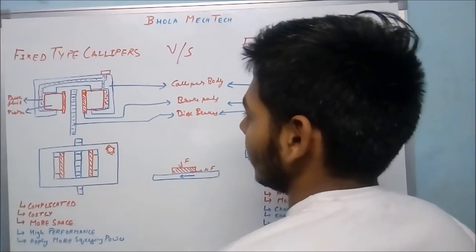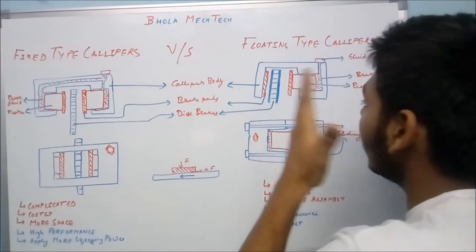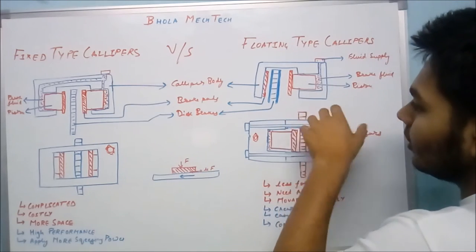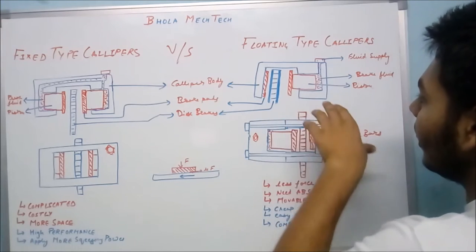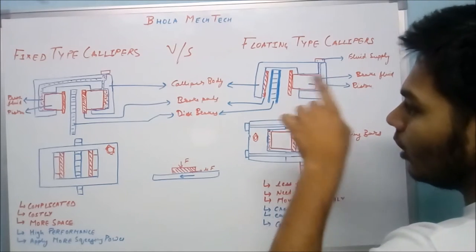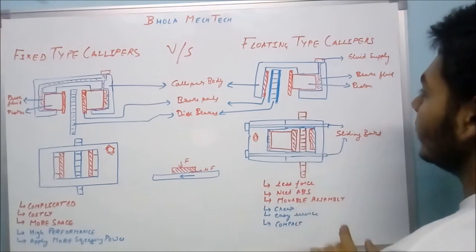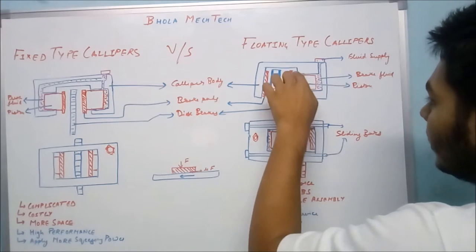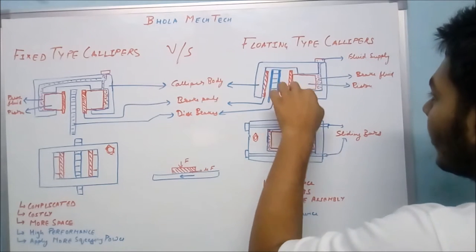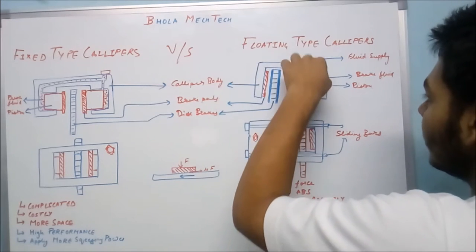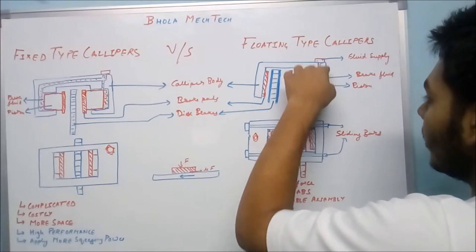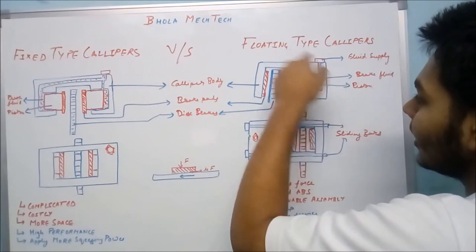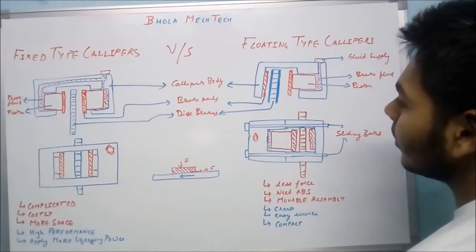Now coming to the diagram of the floating type caliper. The diagram is slightly similar, but there is only one piston and only on one side. This is the brake piston, this is the brake pad, this is the caliper body, this is the cavity for pressurized fluid to come in, and this is the other pad that is directly mounted on the body of the caliper.